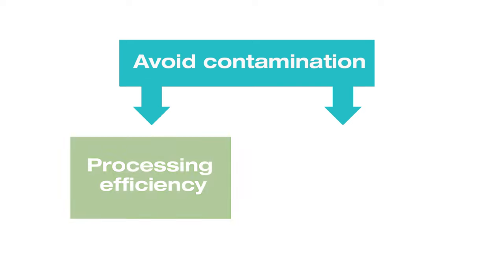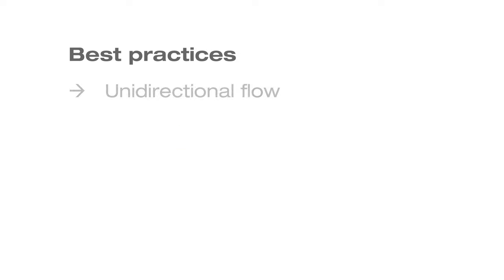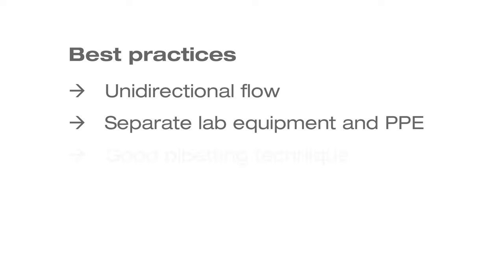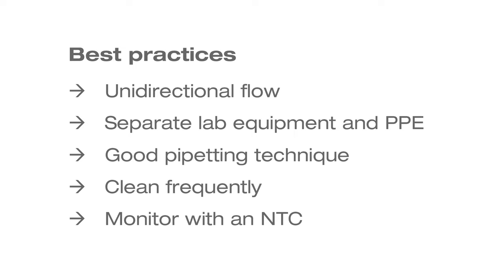Using the best practices we've highlighted in this video can help you avoid contamination in your lab, ensuring greater processing efficiency and robust data. Be sure to set up your lab to use unidirectional flow, separate lab equipment, and PPE. Focus on good lab technique when pipetting, handling samples, and using index adapters. Clean areas frequently, and monitor performance with an NTC. Following these tips will help prevent contamination in your lab, and the headaches that come with it. Happy sequencing, and as always, thanks for being part of the Illumina community.